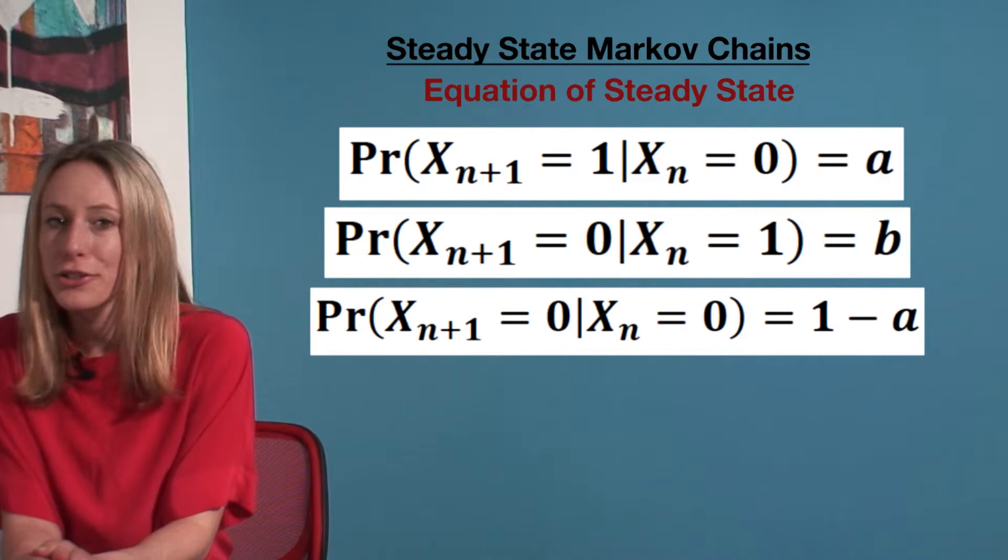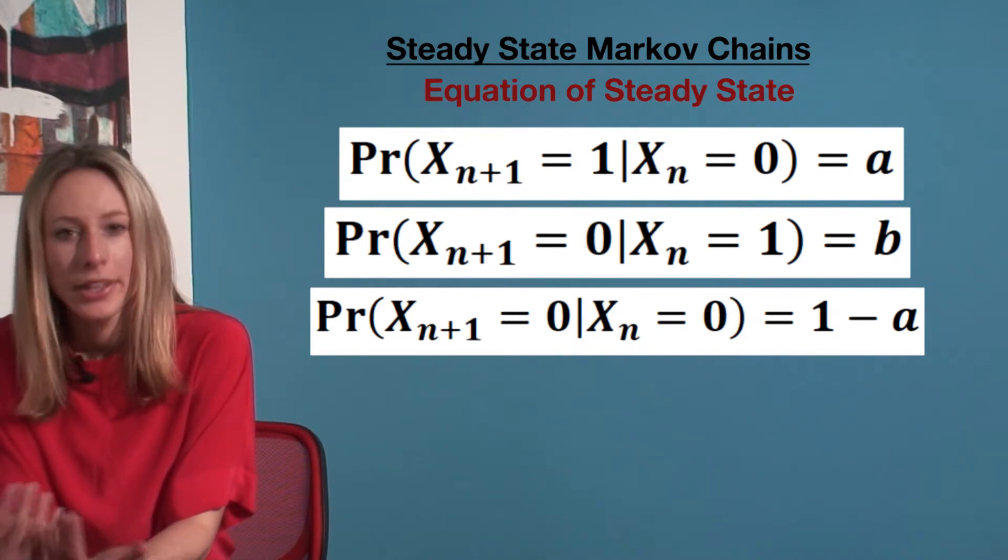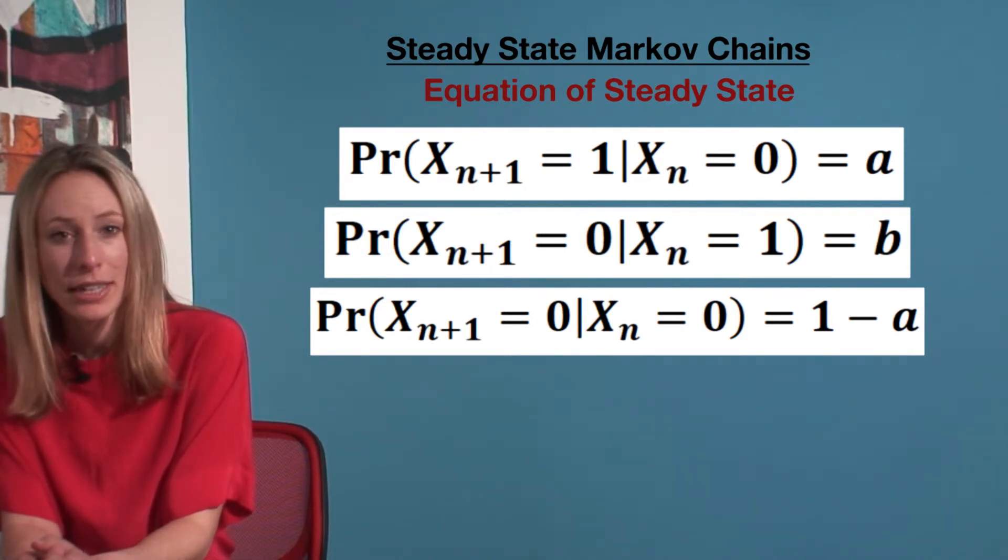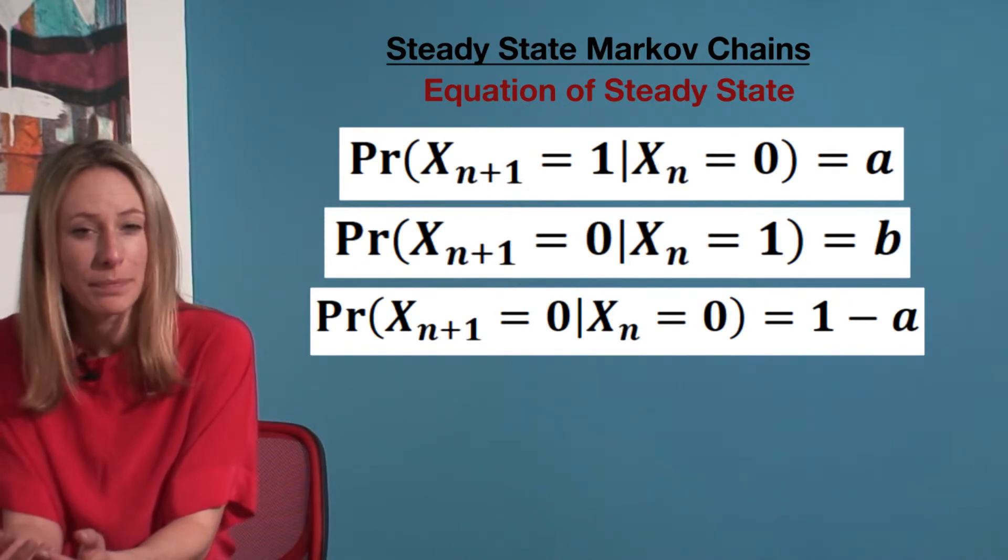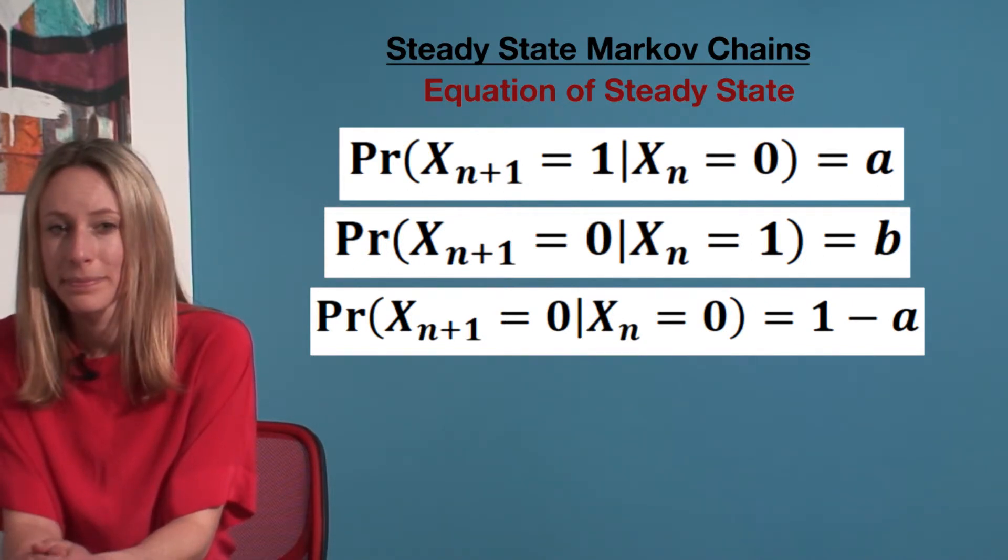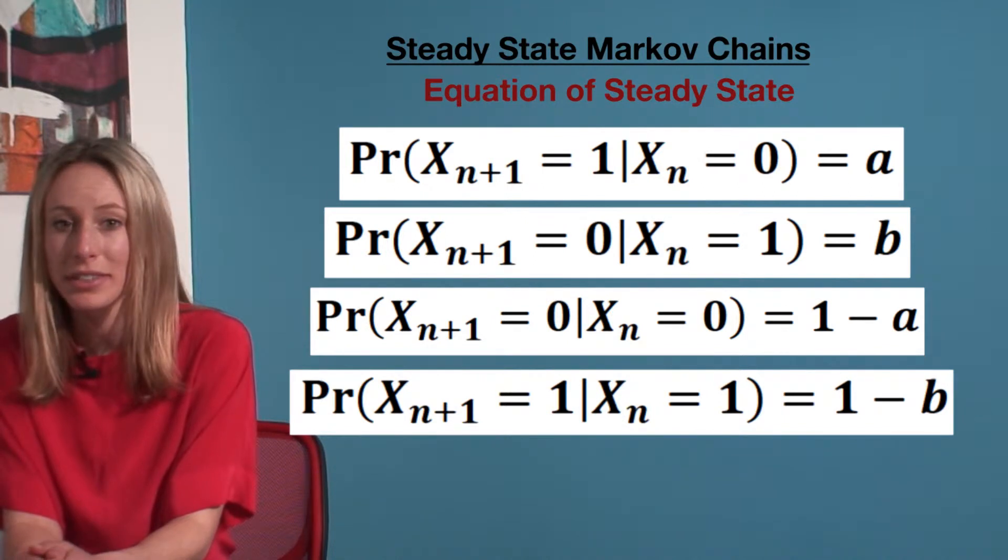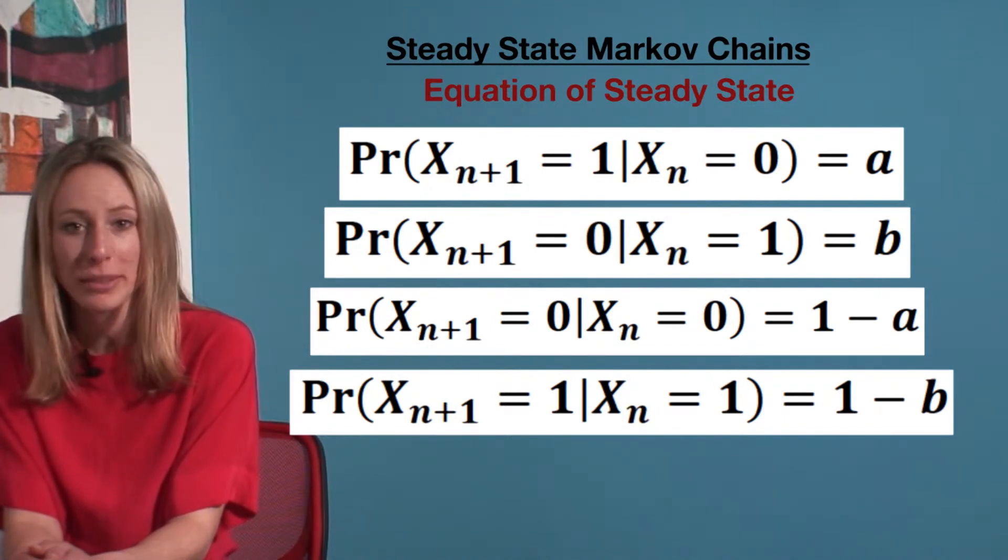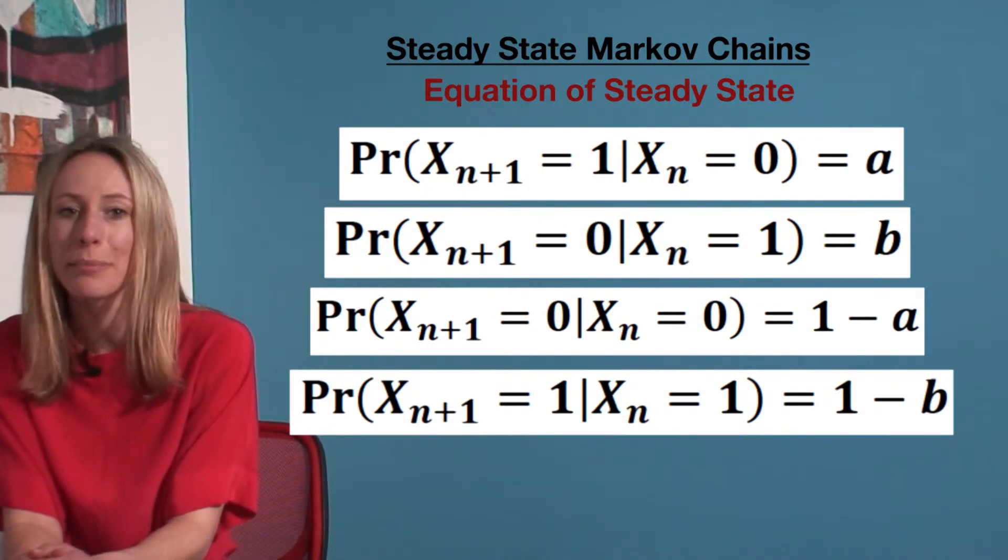Therefore, our other two possibilities are the probability that given it was initially state zero, it will also be state zero in the future, which is 1 minus a. And the probability that given it was initially state one, it will also be state one in the future, which is 1 minus b.